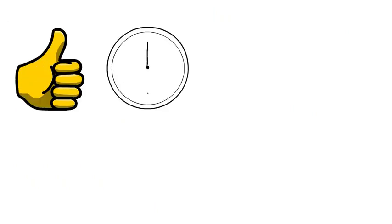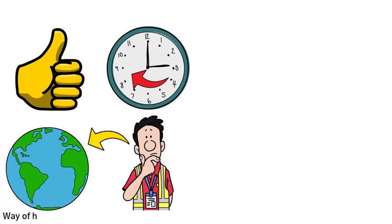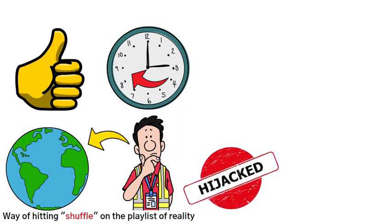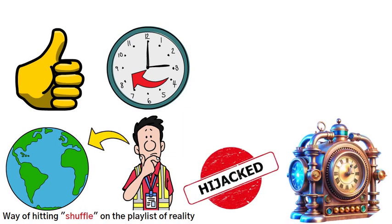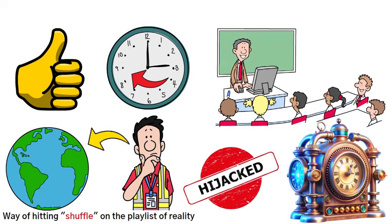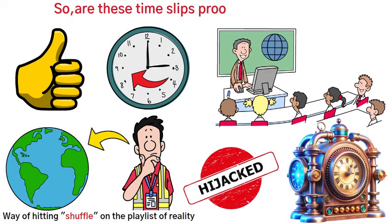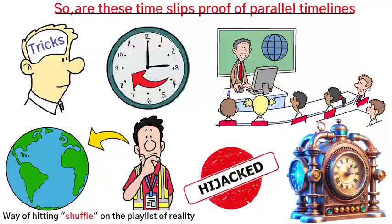How does this happen? Well, some suggest it's a glitch in the cosmic matrix, a temporary breach in the time-space fabric. Think of it as the universe's way of hitting shuffle on the playlist of reality. It's like your day-to-day existence just got hijacked by a rogue time machine, throwing you into a history class without the boring lecture. So, are these time slips proof of parallel timelines, or just our brains playing tricks?